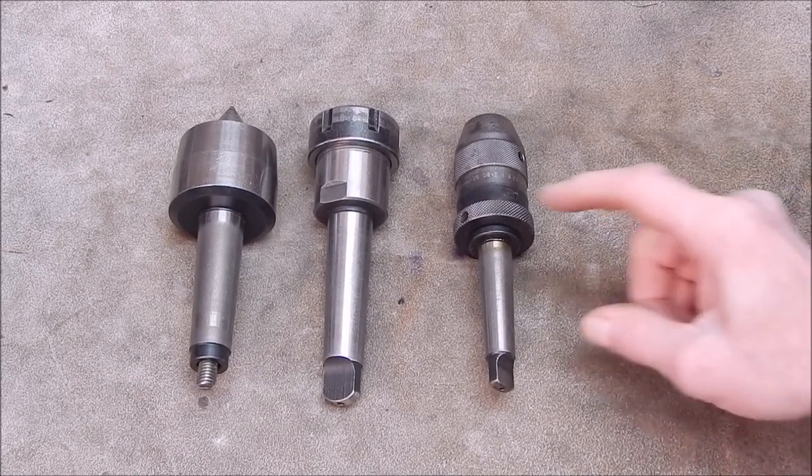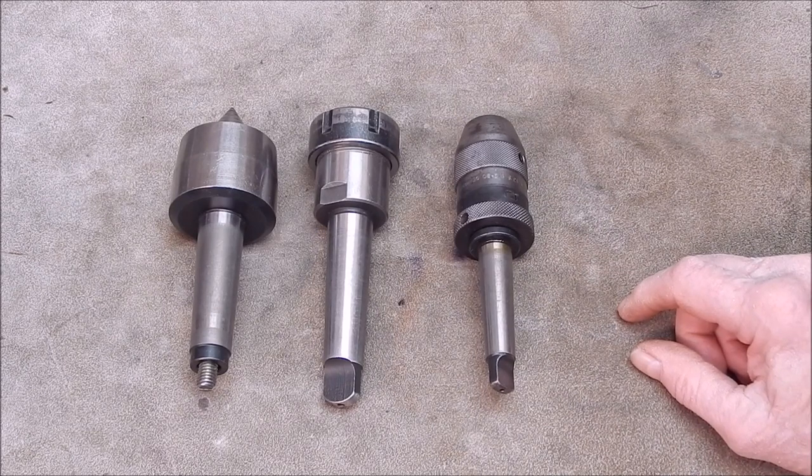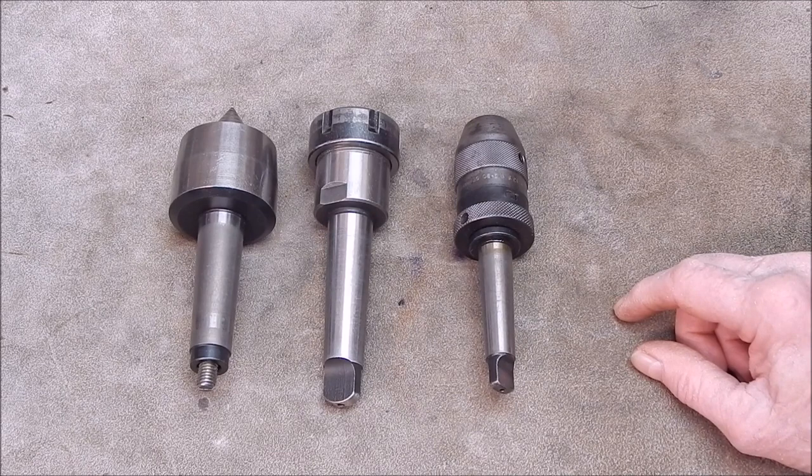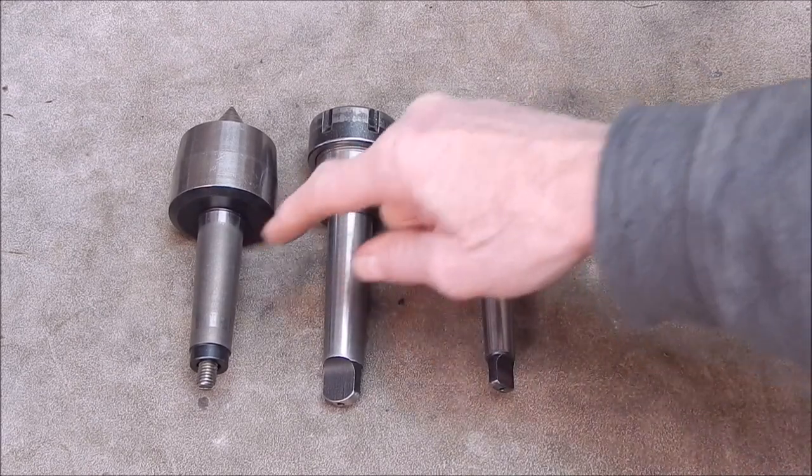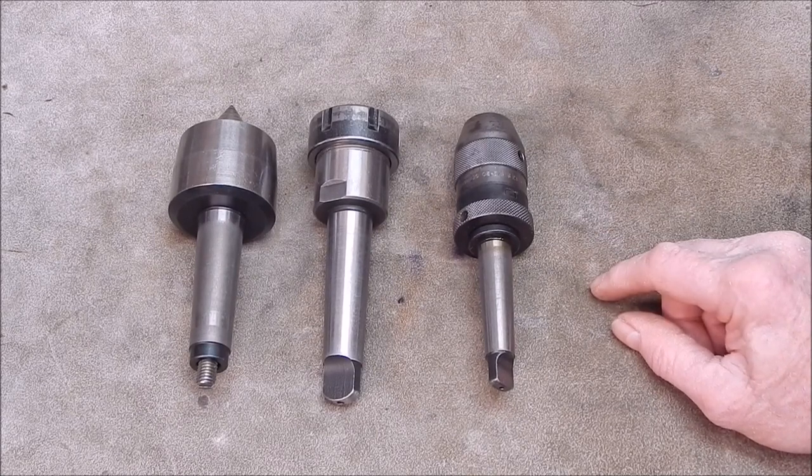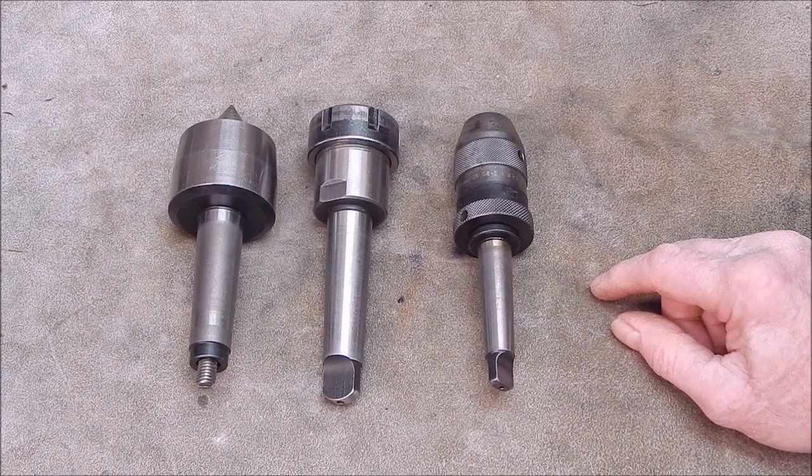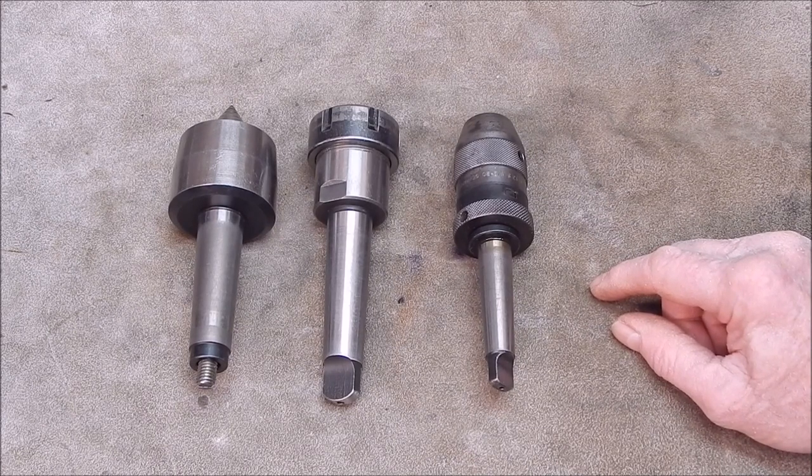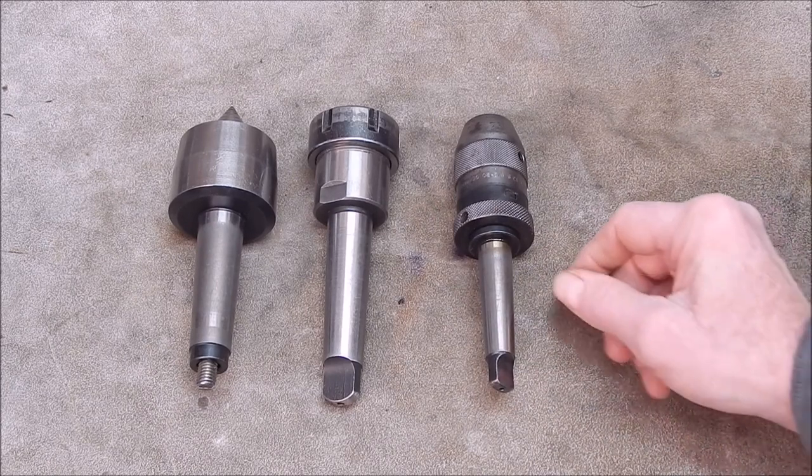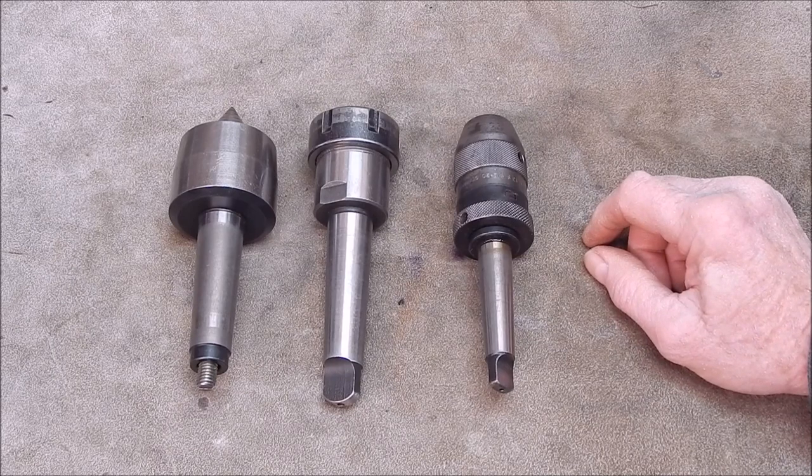Now if you've got a workshop and you've got a lathe and a milling machine or a pillar drill, the odds are you're going to have a variety of different sized Morse tapers, and they can be from Morse 4 commonly down to Morse 0. Quite often it's good to be able to share the various components across the range of machinery.